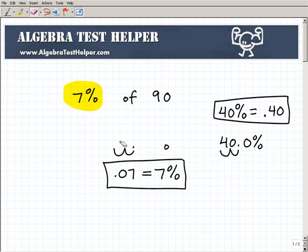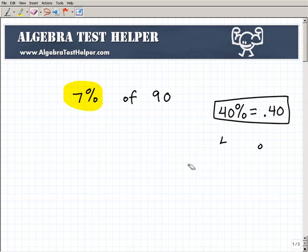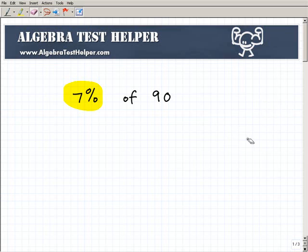Let's move forward and talk about how we find a percent of a number. That's the most common, the most basic type of percent question. So 7% of 90, all you need to do is take your percent and write it as a decimal. That's going to be 0.07. And you're going to multiply that by the number you're trying to find a percent of. So that's 90.